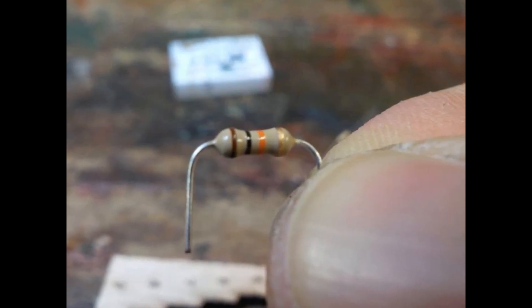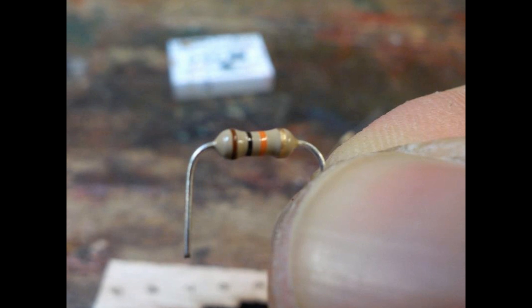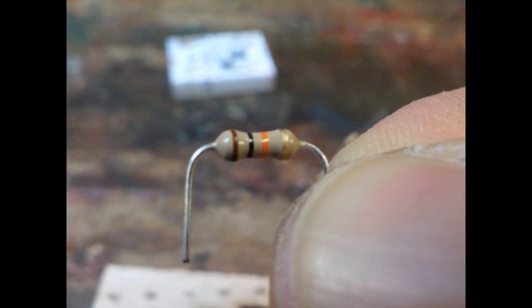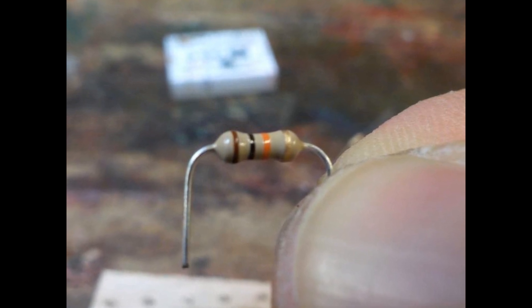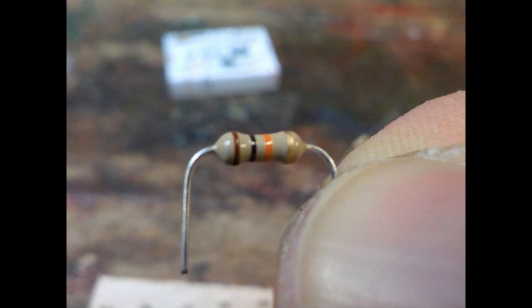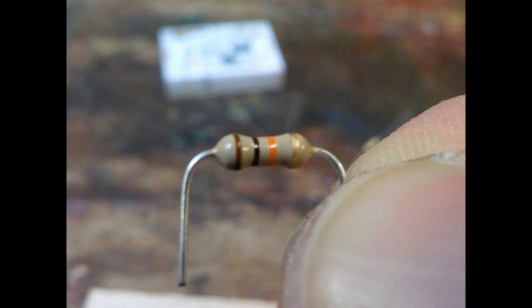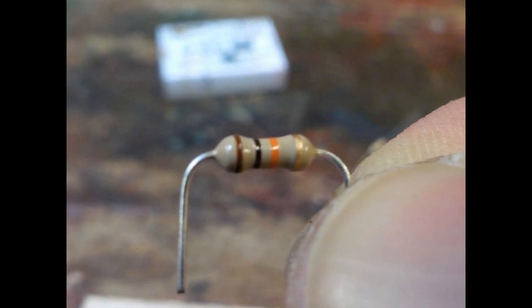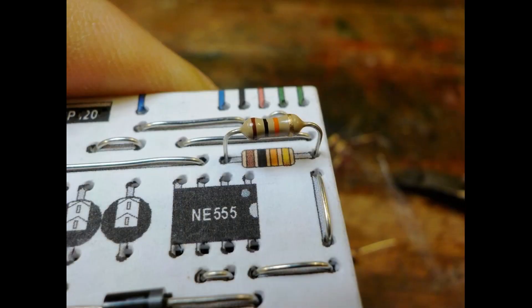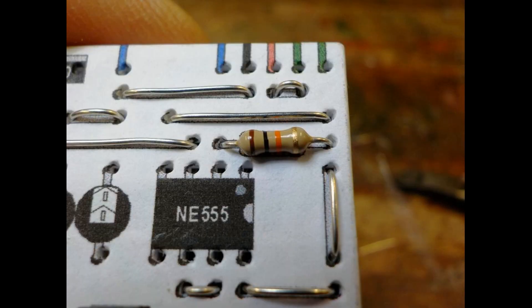The second resistor has a brown, black and orange stripe. So its value is 10 kilo ohms. I'll put some more detailed information on the website about the electronic components in the kit for those who would like to know more. Bend and cut it in the same way. It too is five holes long. Line it up. Remember it doesn't matter which way round resistors go. And push it in.